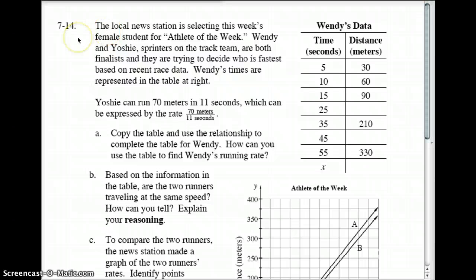news station is selecting their female athlete of the week. Wendy's right times are right here. Wendy can run 30 meters in 5 seconds, 60 meters in 10, and so on. If we were to complete this table, what number would go here? We see 5, 10, 15, 20, 25, so we're skipping one.